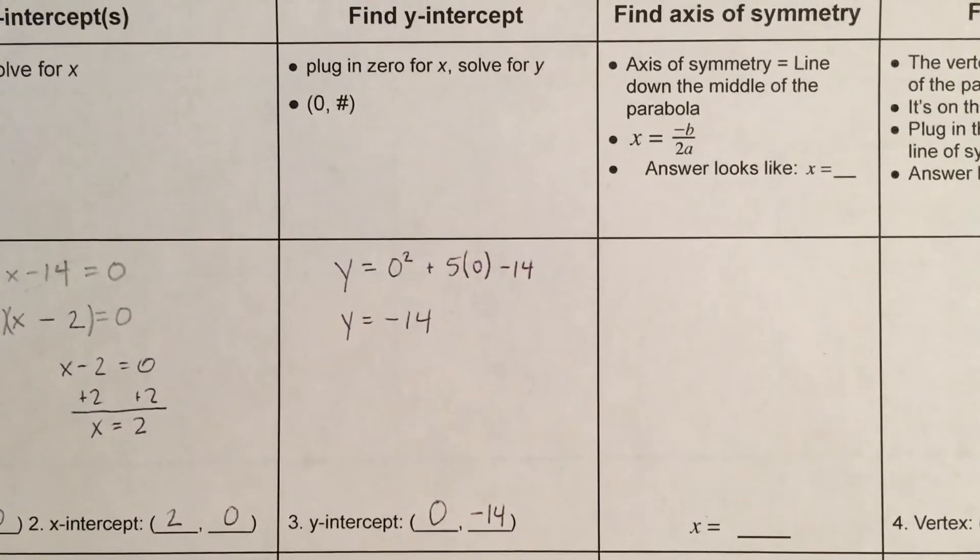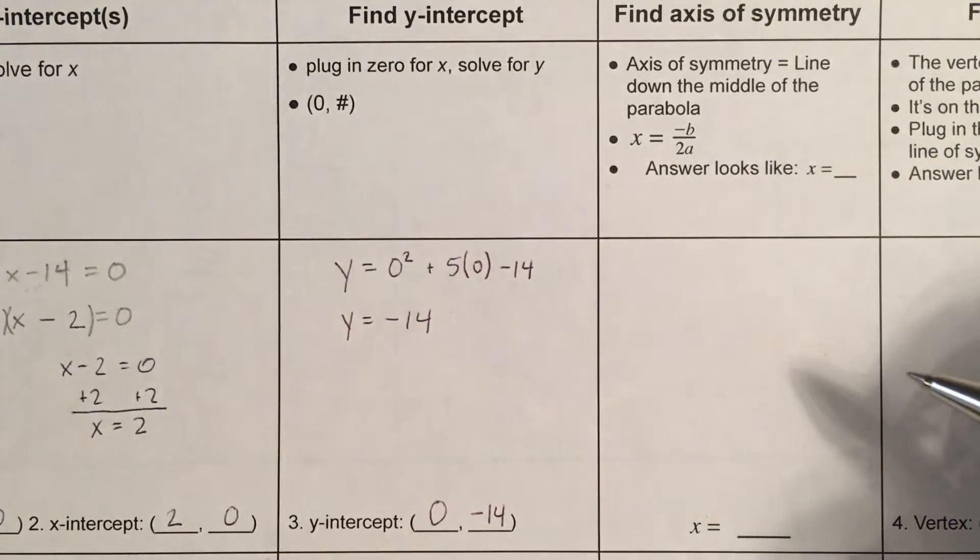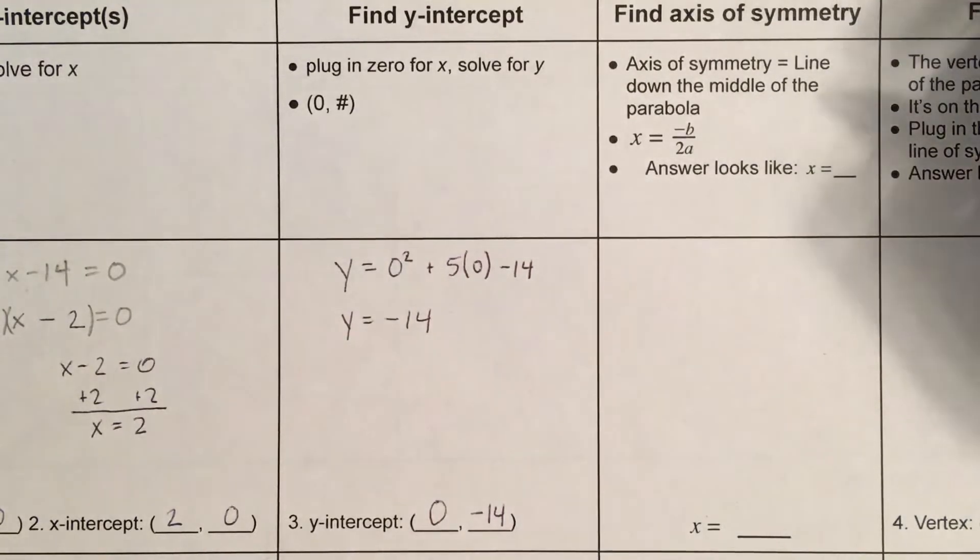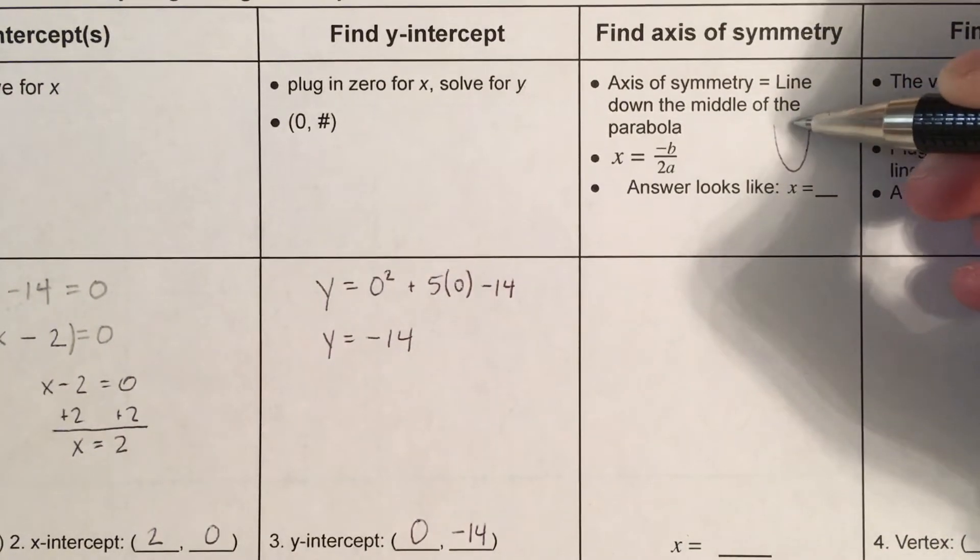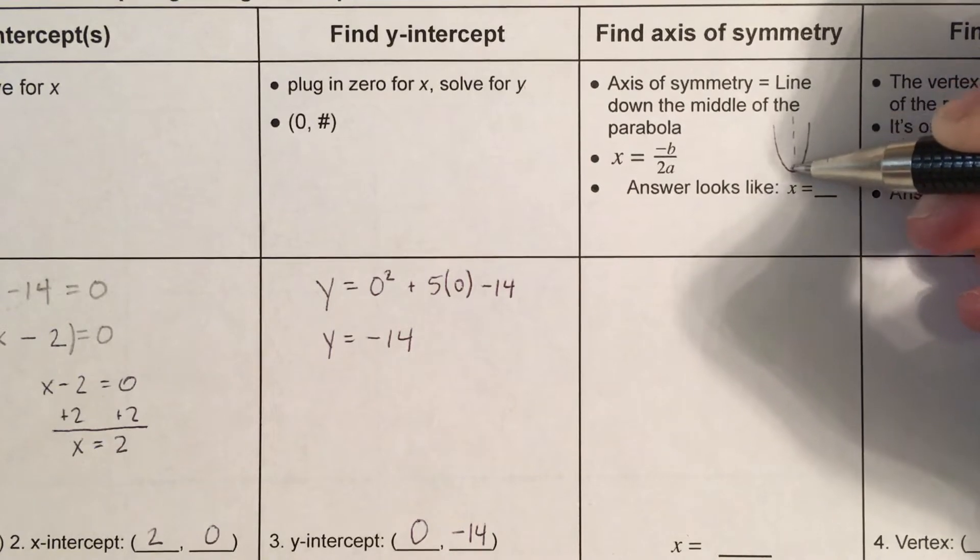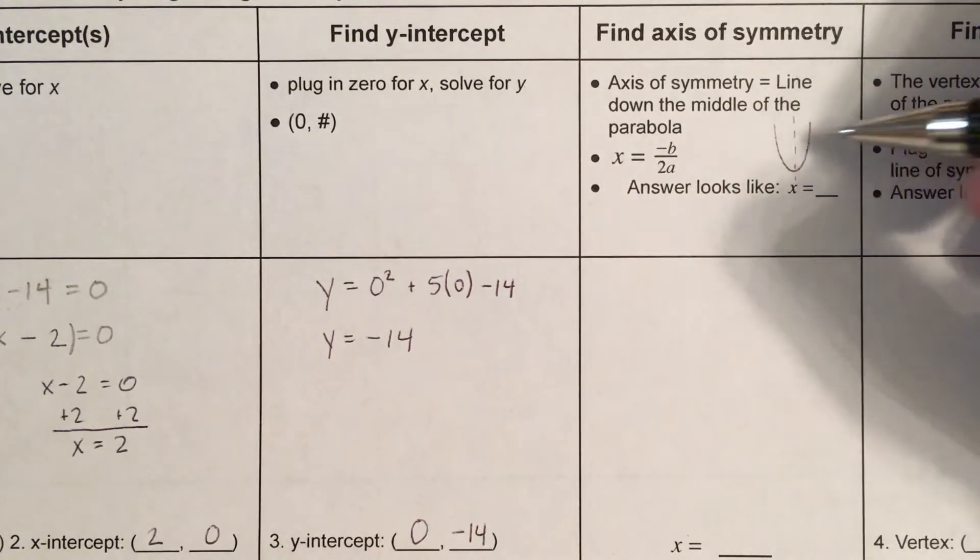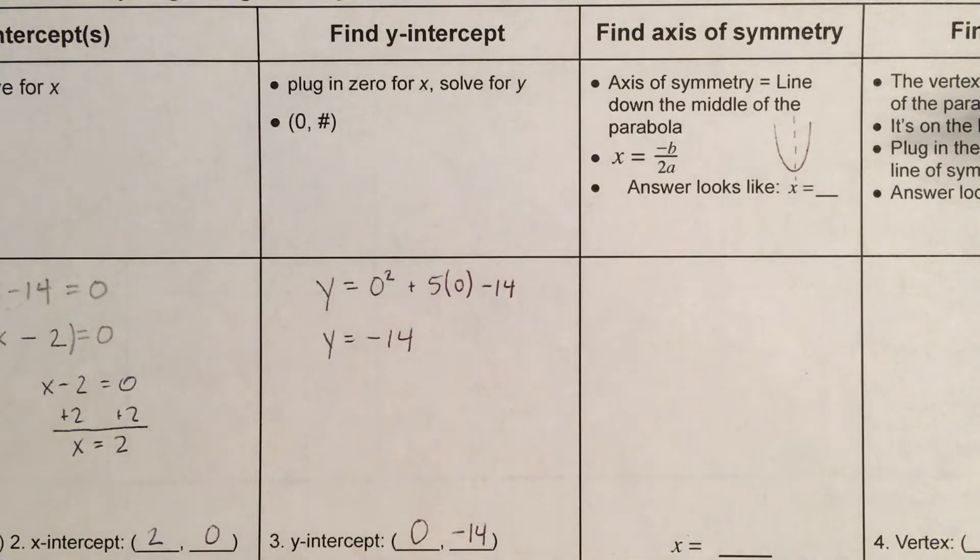Now, this is new. The axis of symmetry. So, a parabola looks like a u. The axis of symmetry is that line down the middle that divides it in half, and it's the same on both sides. Parabolas are what's called symmetrical, meaning they can be sort of folded over this line, and they're the same on both sides.